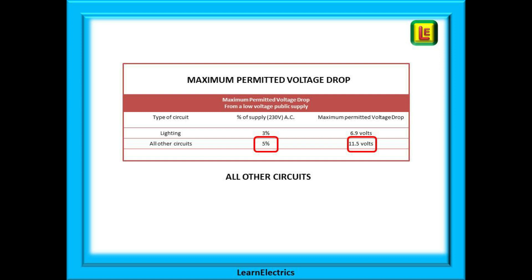The wiring regulations are a code of practice and are non-statutory. So whilst it is not illegal to ignore these maximum values, it is good working practice to follow the recommendations in BS 7671. Showing that you follow the guidance in the wiring regulations is a good point in your favour if things ever go wrong.